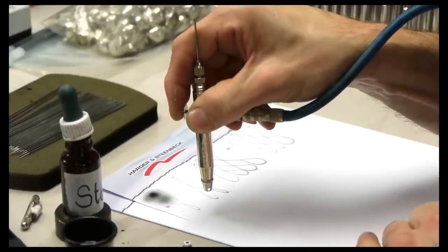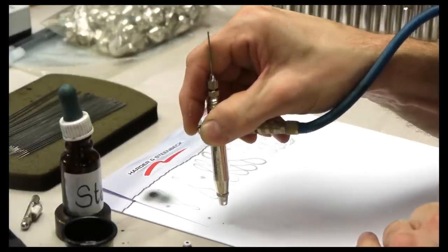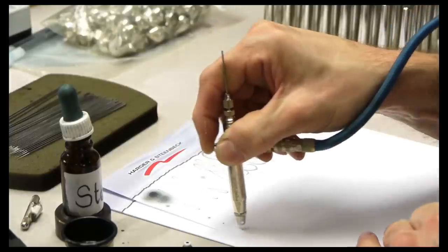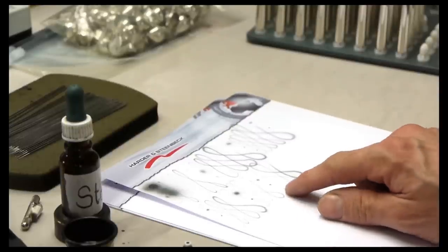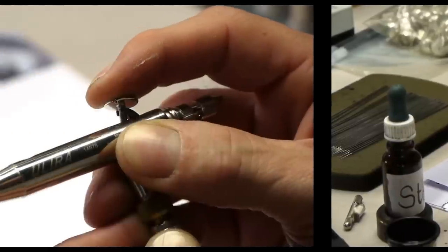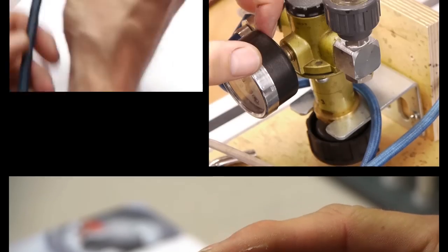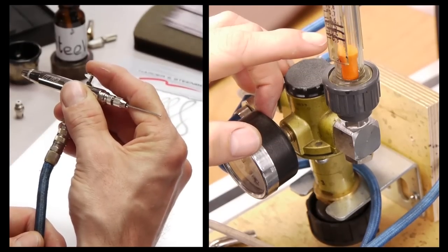When a device is fully assembled, there comes the moment of truth: the first spraying test. What does the spray pattern look like? Are both thin and thick lines possible? Are there any speckles? If anything at all is wrong, individual components or parts are exchanged to correct the problem.